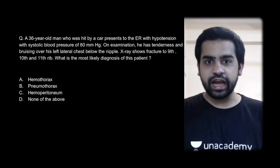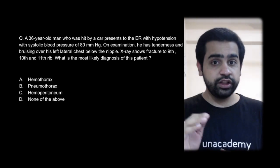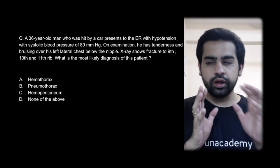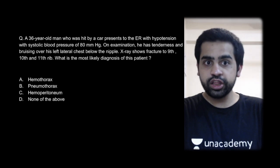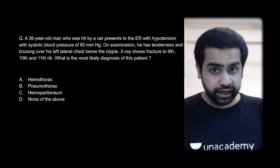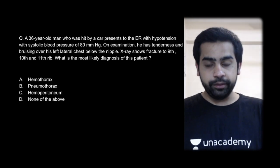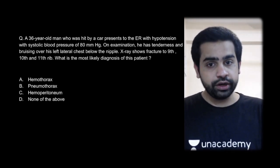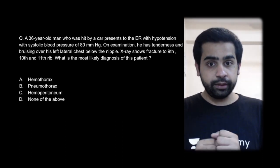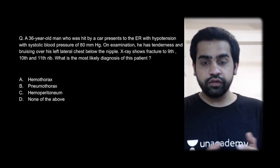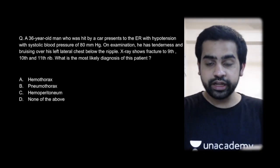Let me walk you through this. The patient has been in an accident and brought in with hemodynamic instability, meaning blood is accumulating somewhere. There is tenderness on the left lower chest wall and fractures of the 9th, 10th, and 11th rib. What you need to understand is that the 9th, 10th, and 11th ribs are in close approximation with the spleen on the left side and the liver on the right side. A fracture of those ribs on the left side injures the underlying spleen, leading to hemoperitoneum — in this case, a splenic injury.